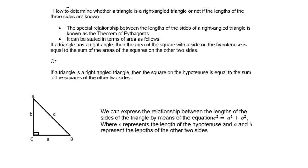Take note: if you look at triangle ABC, we normally name the side small letter a opposite angle A, small letter b opposite angle B, and small letter c opposite angle C. We can express the relationship between the lengths of the sides of the triangle by means of an equation, namely c squared — which is the hypotenuse — is equal to a squared plus b squared, where c represents the length of the hypotenuse and a and b represent the lengths of the other two sides.